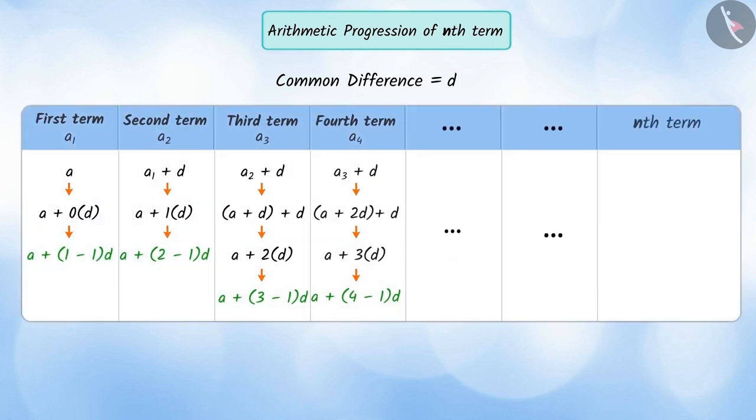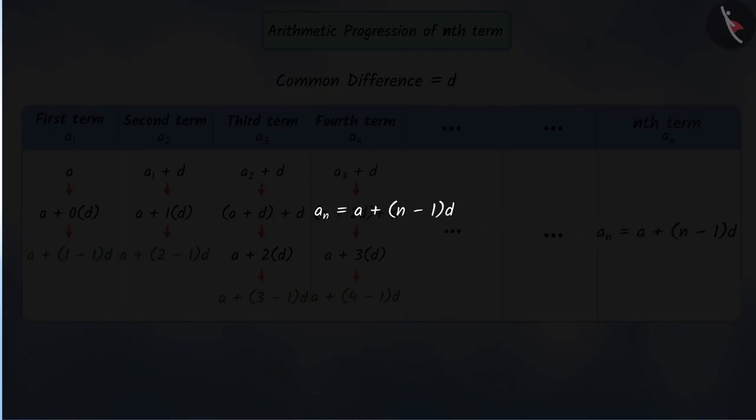Proceeding in the same order, we can express the nth term AN as A plus N minus 1 multiplied by D. It is the nth term of AP where A is the first term and D is the common difference. Here, AN is called the general term of an arithmetic progression.